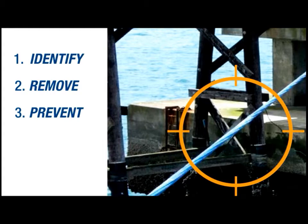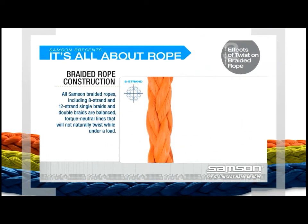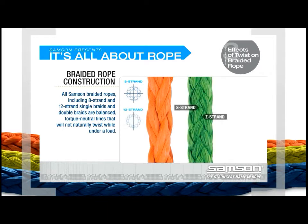All Samson braided ropes, including 8-strand and 12-strand single braids, double braids, and core-dependent double braids, are constructed from an equal number of S-strands — strands that twist to the left — and Z-strands — strands that twist to the right. This creates a balanced or torque-neutral construction that will not naturally twist while under load.